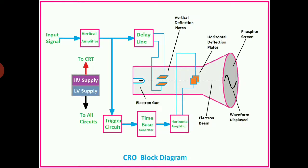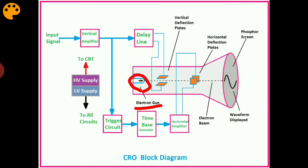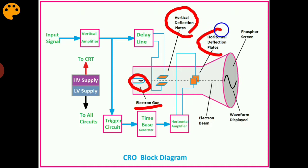What are the important parts of a CRO? It has an electron gun, which will be emitting electron beams. Then there is a pair of vertical deflection plates and a horizontal deflection plate. Finally, we have the phosphor screen where the waveform will be displayed.